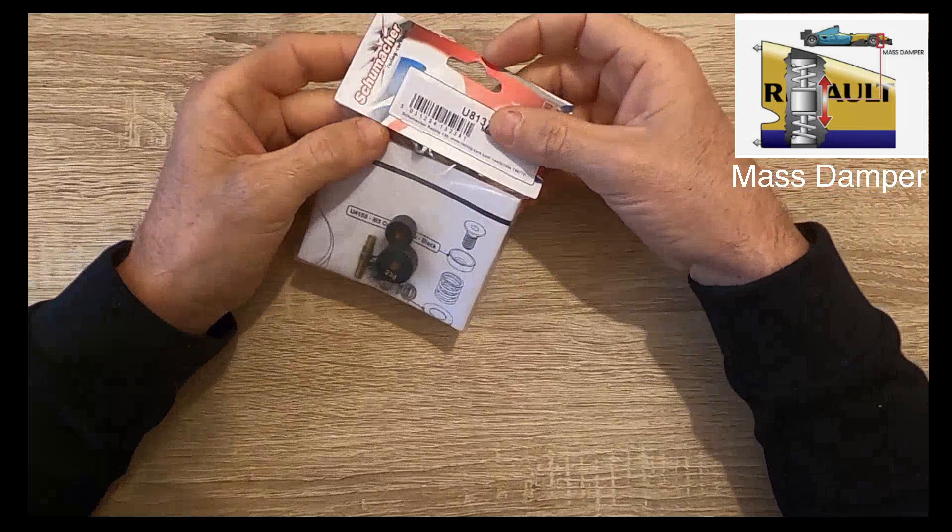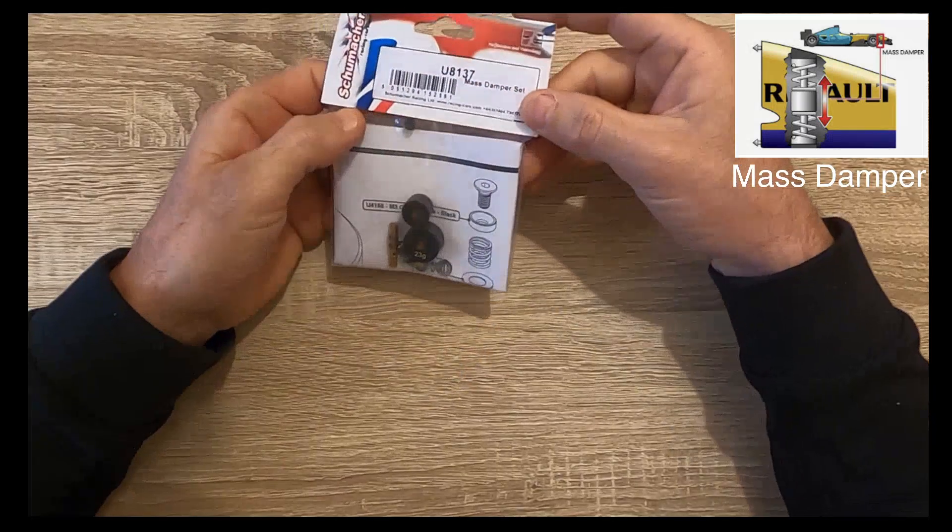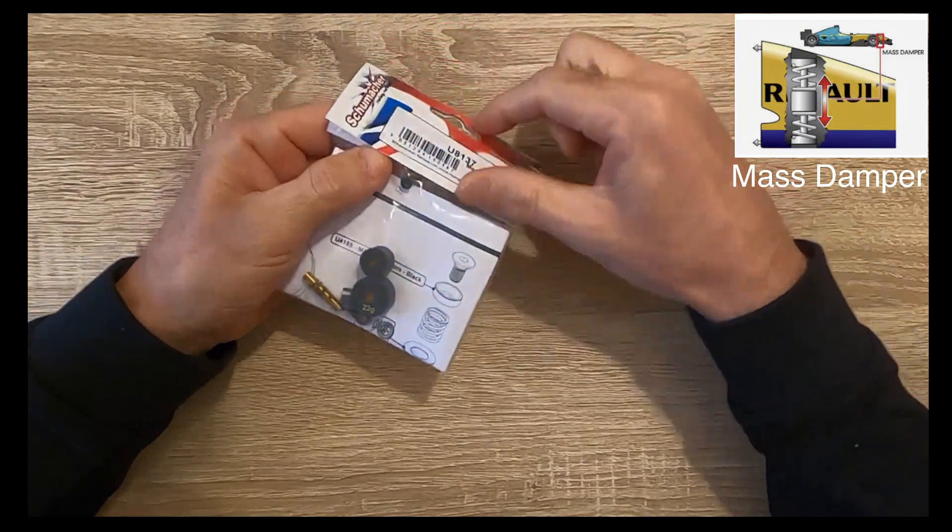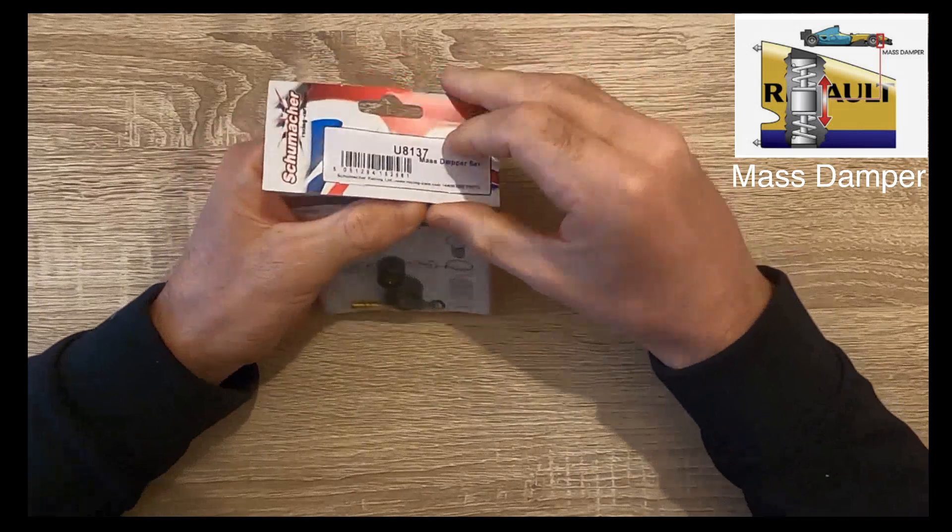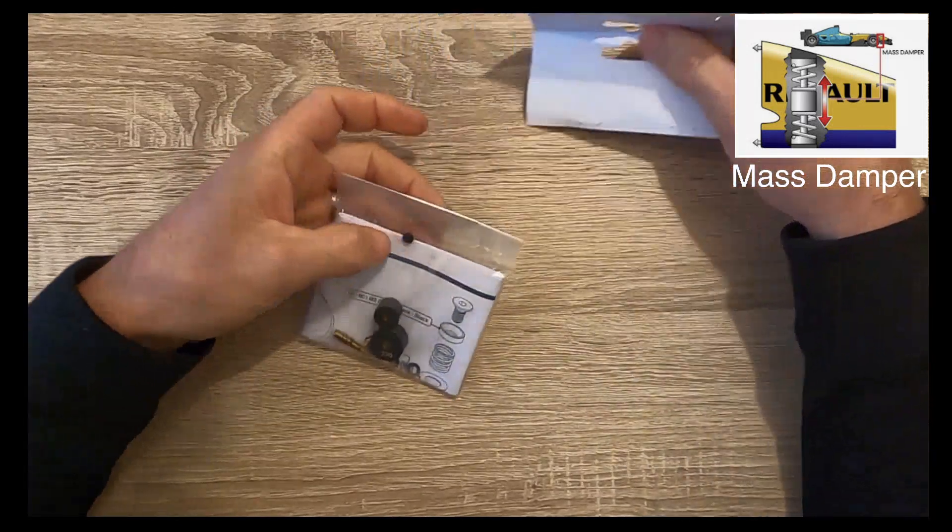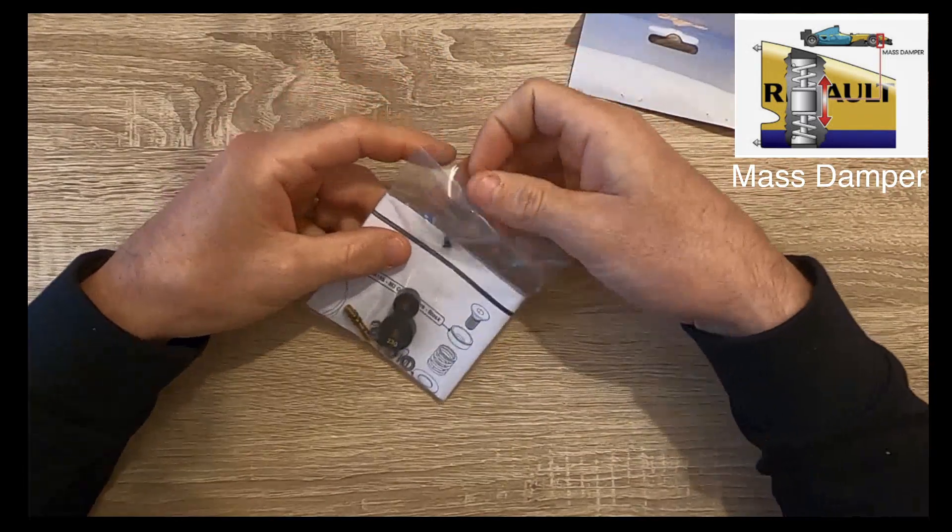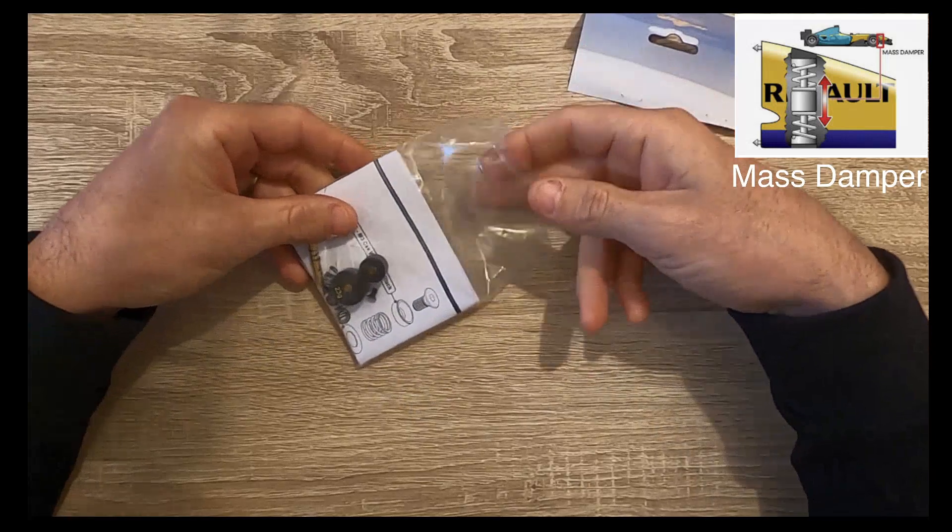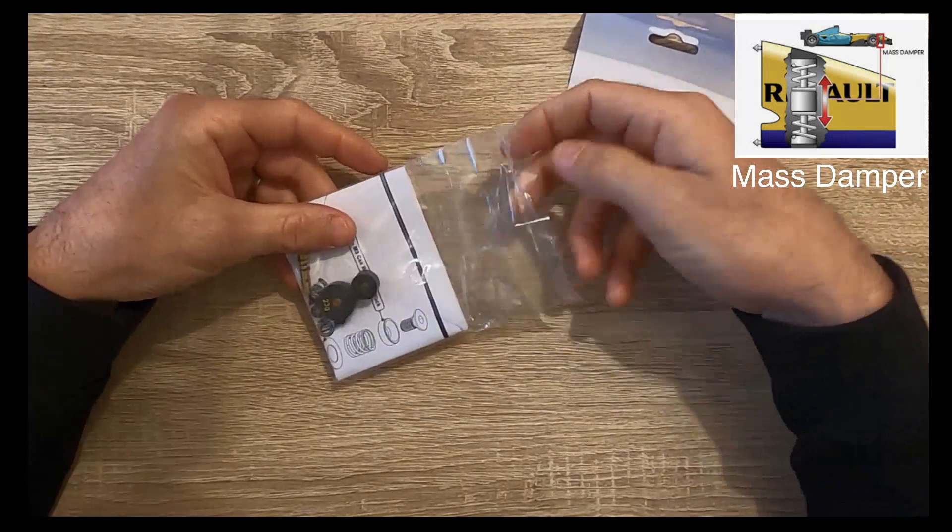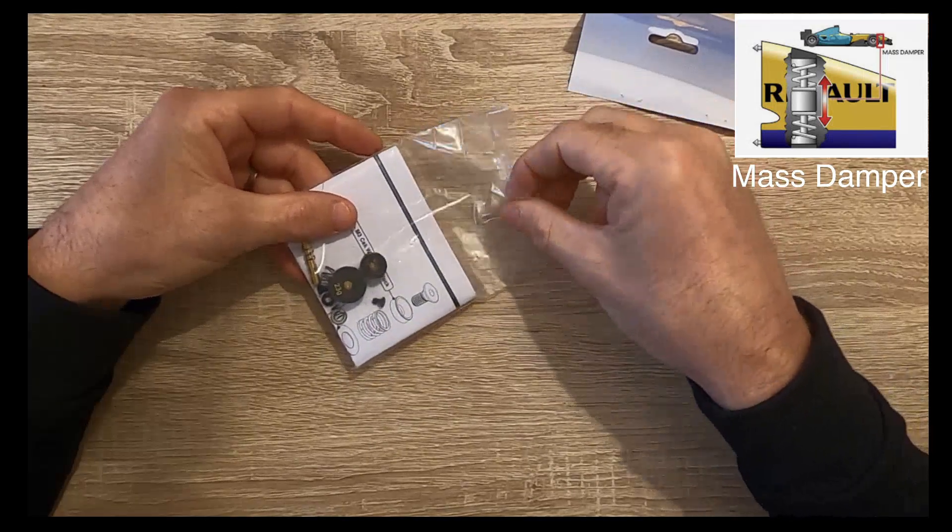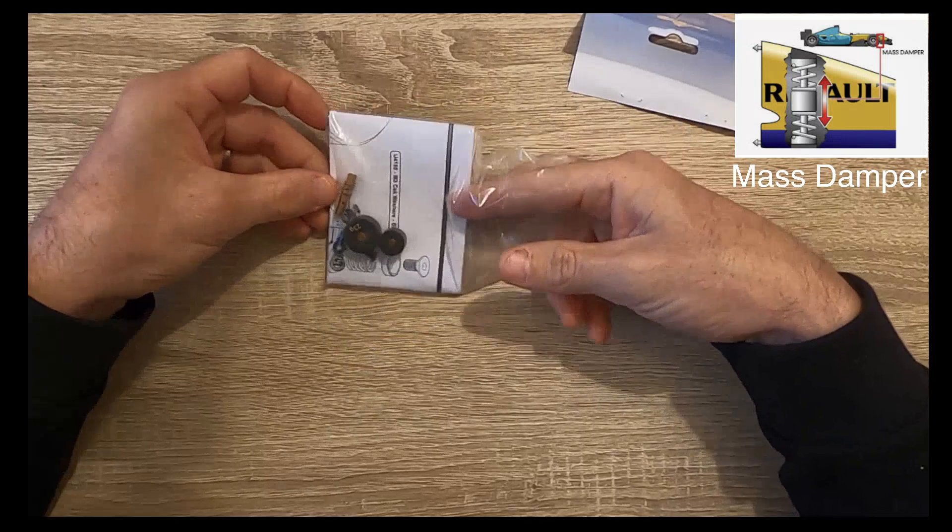We won't go too much into that. It's part number U8137, and if you've not seen one before, that's why I've done a little video clip for you. It comes with a couple of weight variations. I'll talk you through the actual mass damper itself and then show you where it fits on the car.